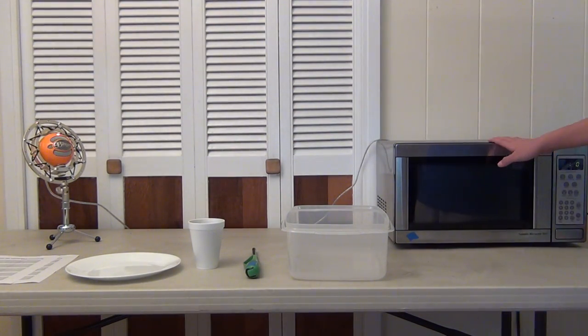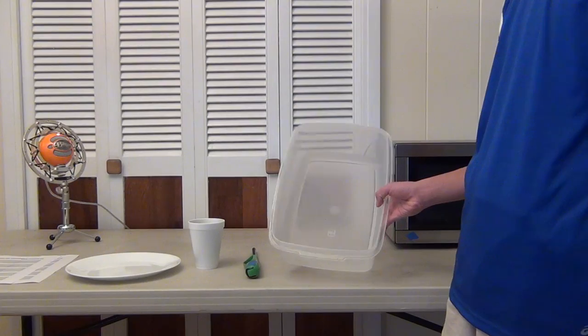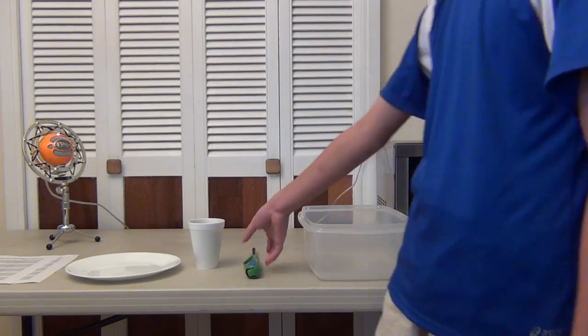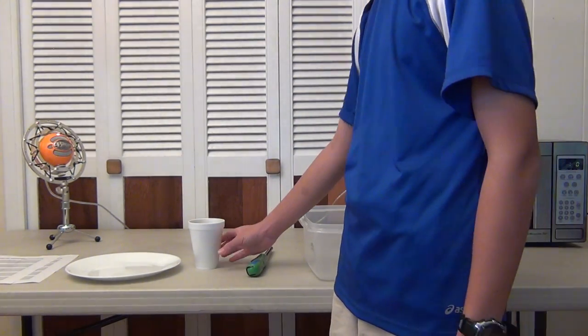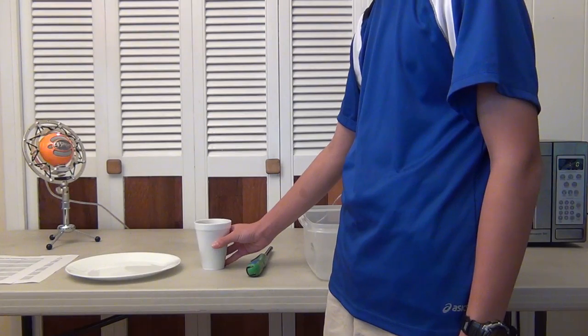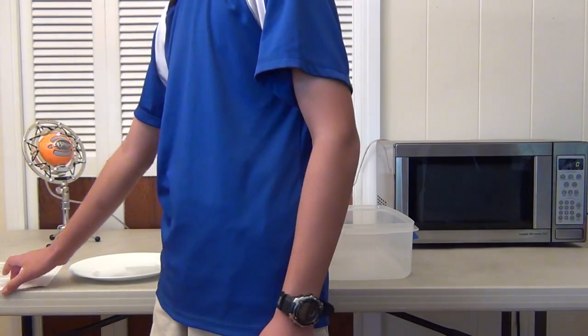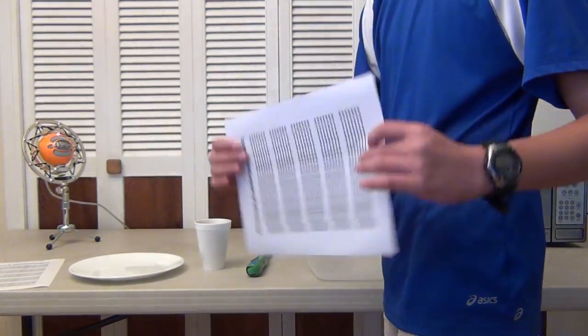So to get started, you'll need a microwave, a container to put the piece of paper in, a lighter, a cup of coffee or tea, a plate, and lastly, the piece of paper you want to make look old.